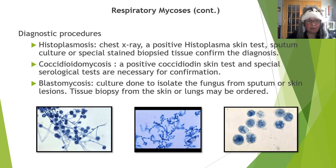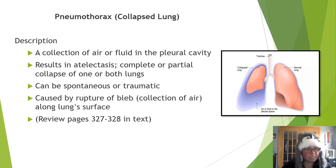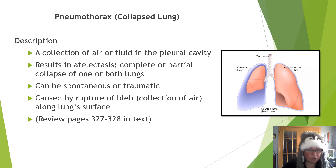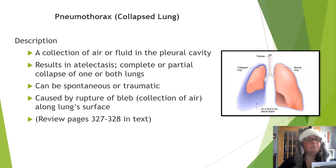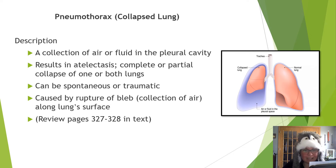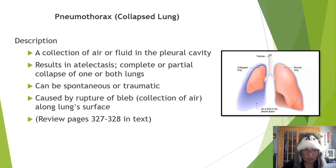Tissue biopsy from skin or lungs may be needed. Next is pneumothorax — the collapsed lung. This occurs when a collection of air or fluid in the pleural cavity results in atelectasis, a complete or partial collapse of one or both lungs. This condition can be spontaneous or traumatic. A bleb — B-L-E-B — is a collection of air along the lung surface. If that bleb ruptures, it would cause pneumothorax. Review pages 327–328 for more in-depth information.